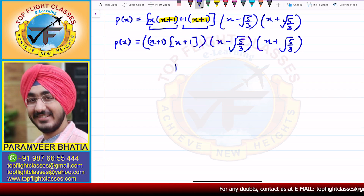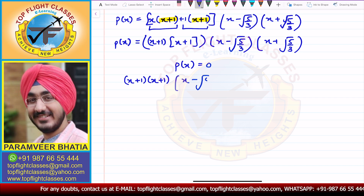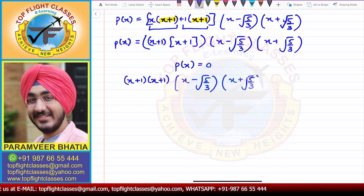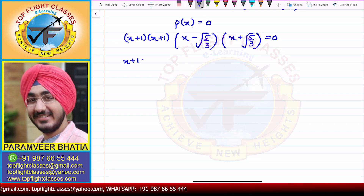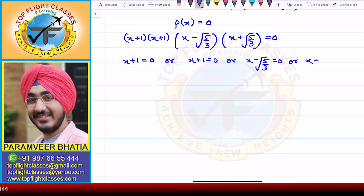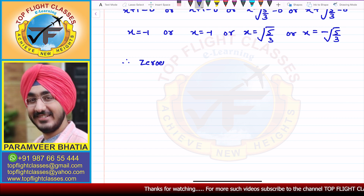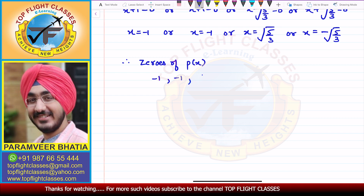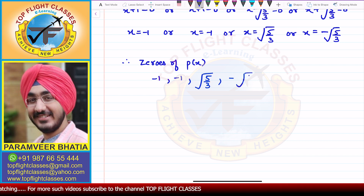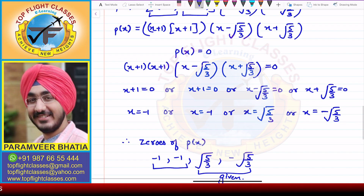So p(x) = (x + 1)(x + 1)(x - √(5/3))(x + √(5/3)) = 0. From here, x + 1 = 0 gives x = -1, or x + 1 = 0 gives x = -1, or x = √(5/3), or x = -√(5/3). Therefore, the zeros of the polynomial p(x) are -1, -1, √(5/3), and -√(5/3). These are the zeros, and the last two were already given.